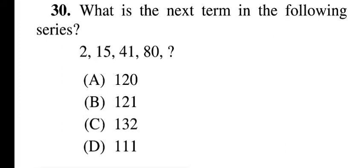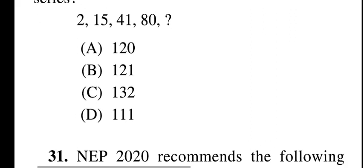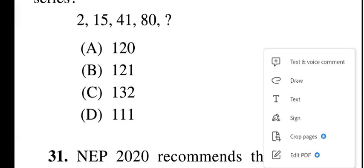Question thirty: what is the next term in the series — 2, 15, 41, 18, and what? Options: 120, 191, 132, 111. Question thirty, option C is correct: 132. Try to solve it yourself.